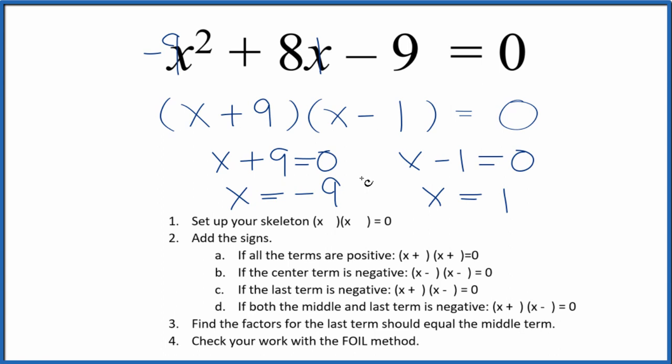So that's it. This is Dr. B factoring the equation x squared plus 8x minus 9 equals 0. Thanks for watching.